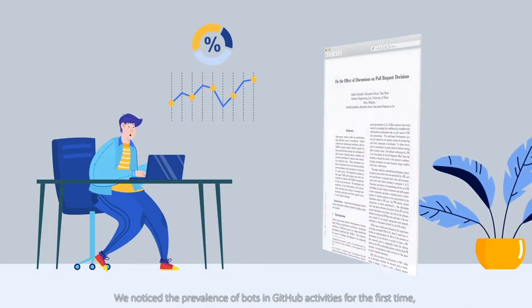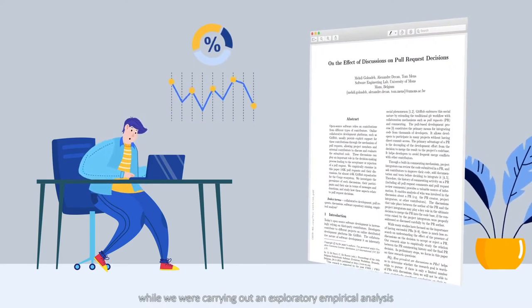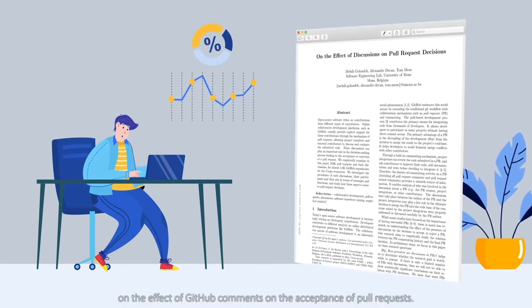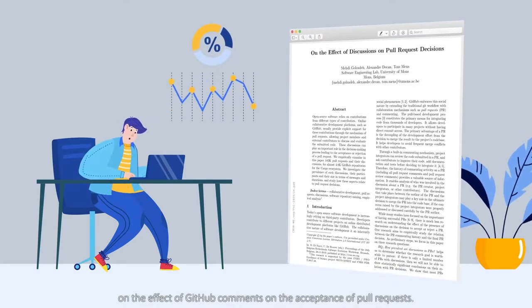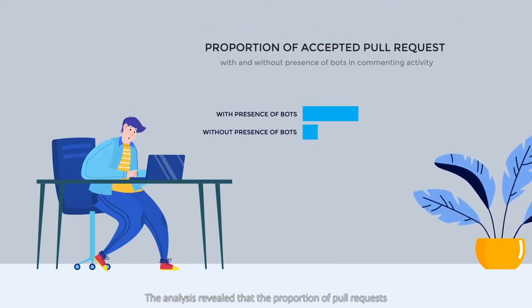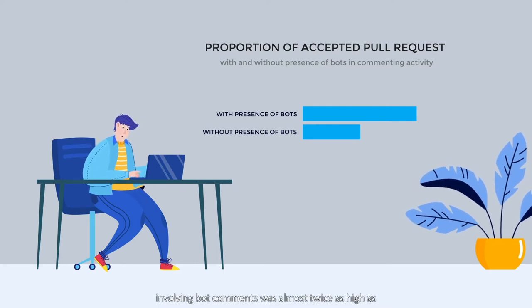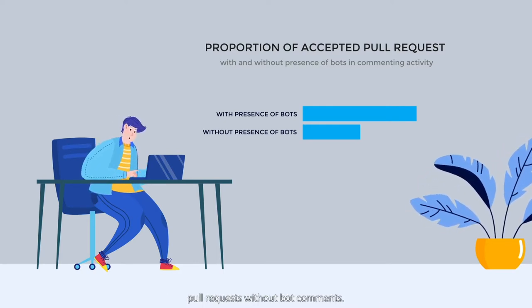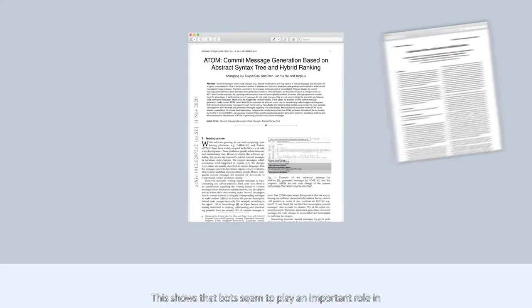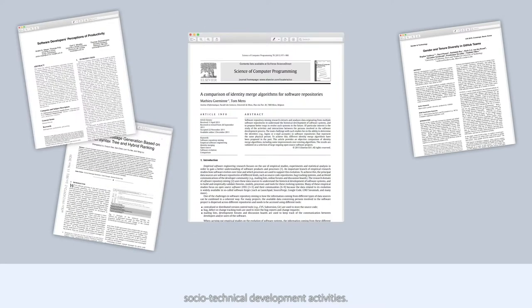We noticed the prevalence of bots in GitHub activities for the first time while we were carrying out an exploratory empirical analysis on the effect of GitHub comments on the acceptance of pull requests. The analysis revealed that the proportion of pull requests involving bot comments was almost twice as high as pull requests without bot comments. This shows that bots seem to play an important role in socio-technical development activities.